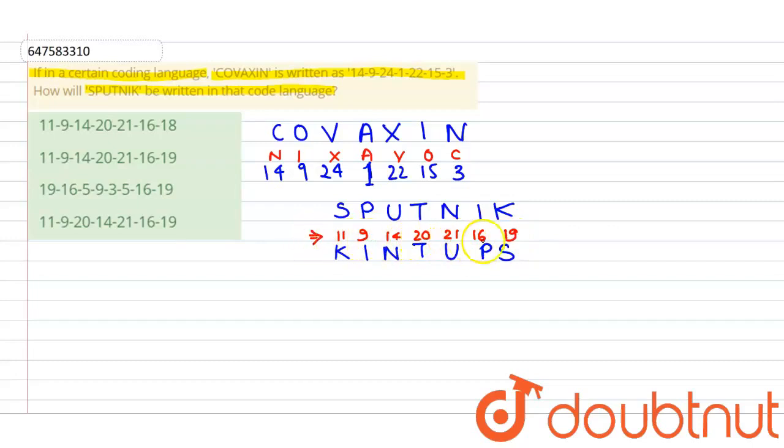that is 11, 9, 14, 20, 21, 16, and 19. Let's find out which option has this available. Option A... B... 11, 9, 14, 20, 21, 16, but here it's 18 when it should be 19. That's wrong. Option C: 11, 9, 14, 20, 21, 16, 19 - this is completely correct.